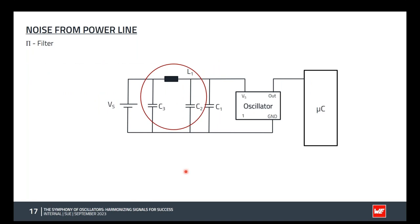The Pi filter adds in theory around 60 dB attenuation per decade (less in practice). A common question is whether C2 and C3 should be the same value — that's up to you. If component size becomes very large due to the filter frequency, you might choose two different values to avoid oversized components.